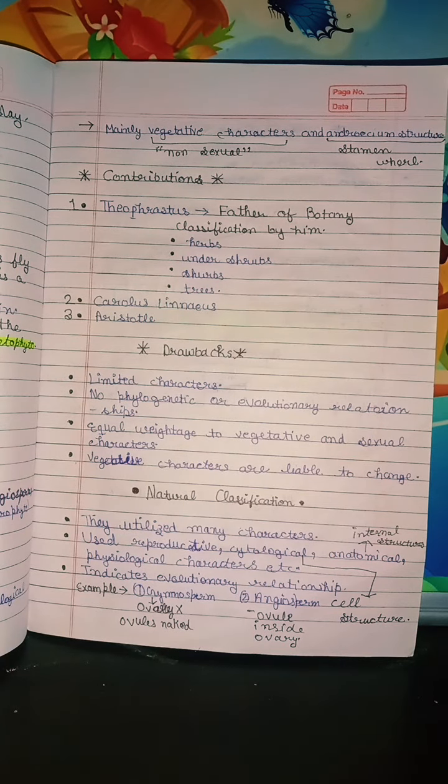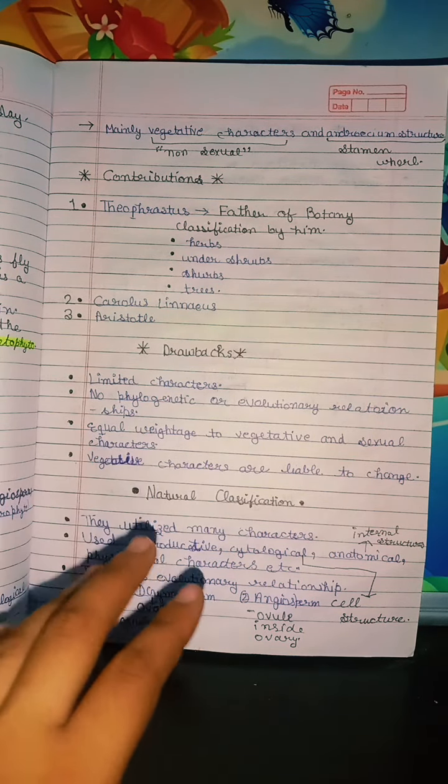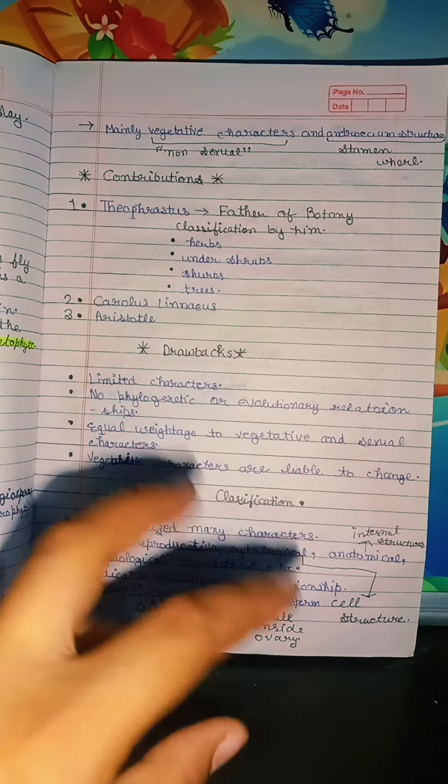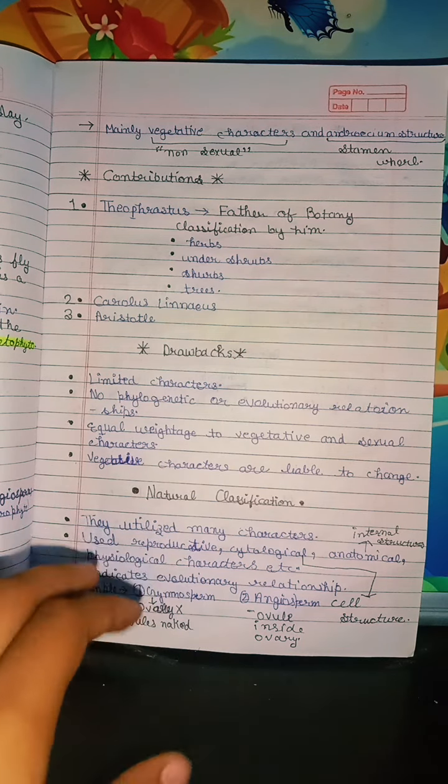Today we will study artificial classification, which depends on morphological characters, mainly the vegetative character and the androecium structure.